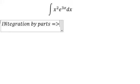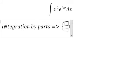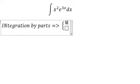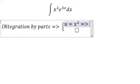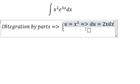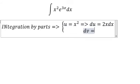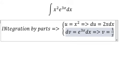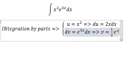So in here, we will put u is x square. So we have du equals 2x dx. And dv is e power 3x dx. So we can find v is 1 over 3 e power 3x.